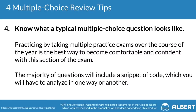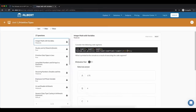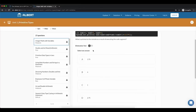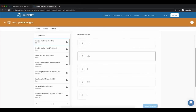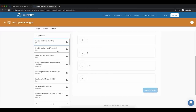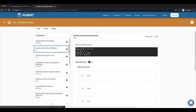The last tip for tackling the multiple choice section is to make sure you're familiar with the ways the College Board phrases questions. To do this, you can take a look at sample practice questions released in the course and exam description guide, or check out a site like Albert to get extra practice and exposure to the sorts of phrasings you can expect on your CSP exam.